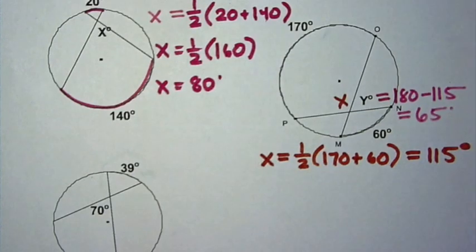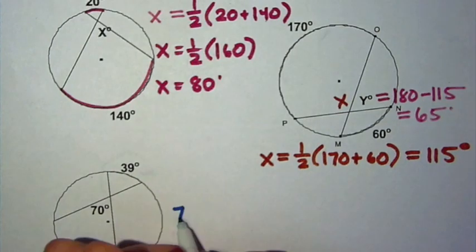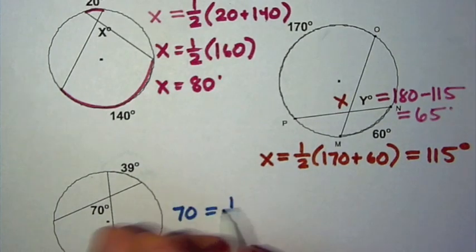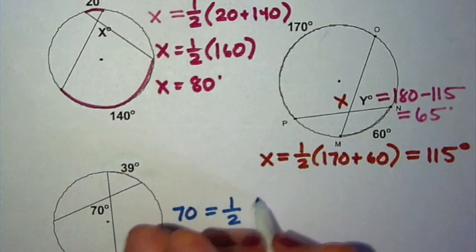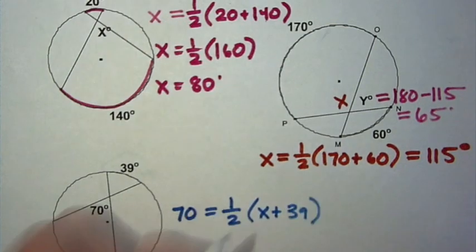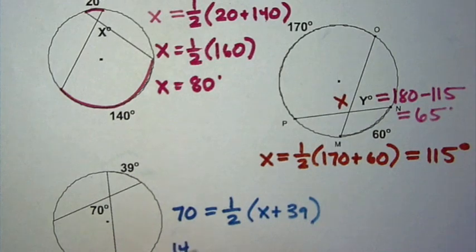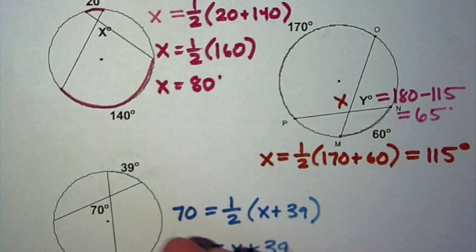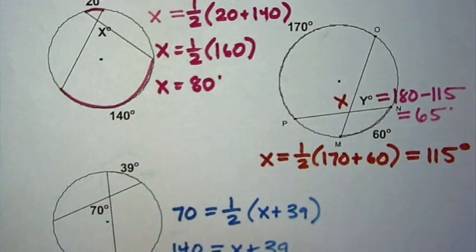Last example on this page, the x is actually the arc on the outside. So just be careful that when you're doing this problem, you follow the equation. So the angle in the middle, 70, is equal to one-half the sum of the two arcs, x and 39 degrees. To solve this, multiply both sides by 2. So 140 equals x plus 39. And then subtract 39 from both sides. So x is equal to 101 degrees.